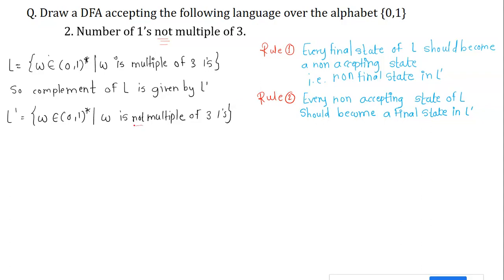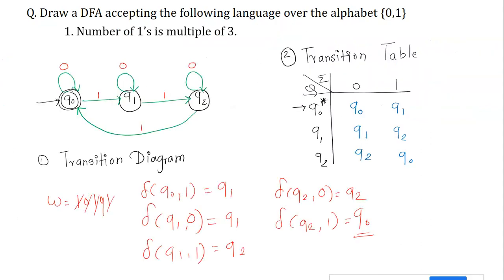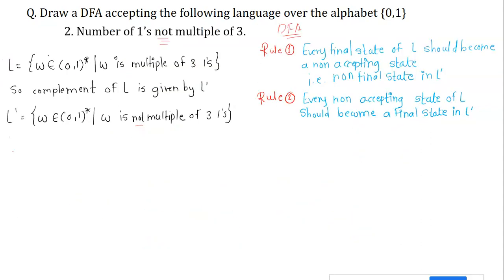To construct the complement DFA, there are two rules: Rule 1 — every final state of the original DFA becomes a non-final (non-accepting) state. Rule 2 — every non-final state of the original DFA becomes a final (accepting) state. Simply swap final and non-final states; everything else stays the same.